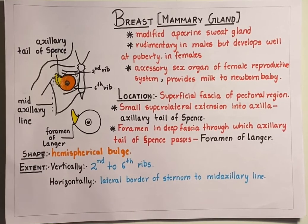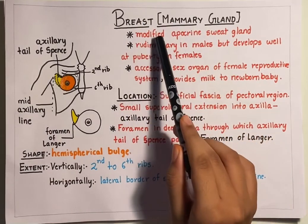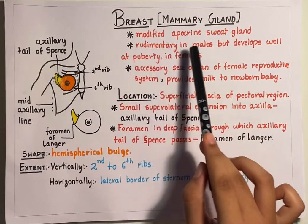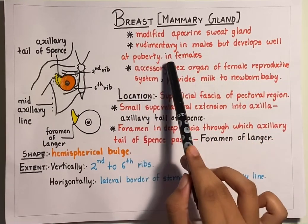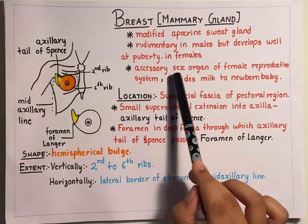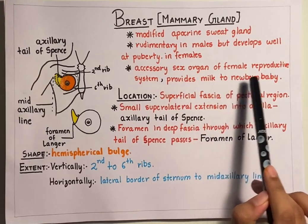Hello everyone, this is Mahanur Ali and welcome to my channel Learn With Ease. In this video, we are going to learn about the most important structure present in the pectoral region which is the breast or the mammary gland. The breast or the mammary gland is a modified apocrine sweat gland which is rudimentary in males but develops well at puberty in females. The breast or mammary gland is an accessory sex organ of the female reproductive system which provides milk to the newborn baby.